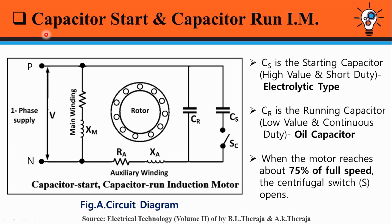Moving towards the working part of Capacitor Start and Capacitor Run Induction Motor: when a single-phase AC supply is provided to the motor, two currents having a phase displacement of about 90 degrees flow through two windings which are 90 degrees displaced in space. So, the motor behaves as a two-phase motor and starts producing a rotating magnetic field, known as RMF, in the air gap. This RMF is cut by the rotor conductors.